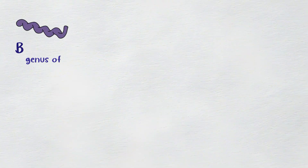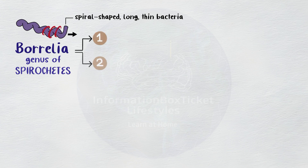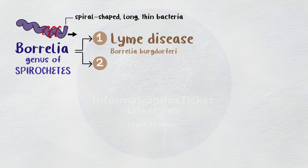The genus Borrelia comprises spirochetes, which are spiral-shaped, long, thin bacteria that travel by spinning or twisting. Two main groupings comprise the genus. The first one is linked to Lyme disease, and Borrelia burgdorferi is the most prevalent species.